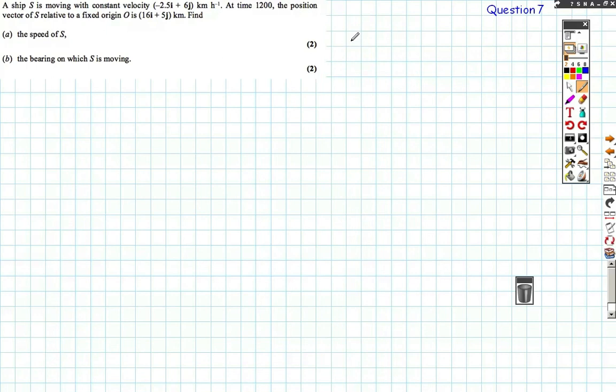So first of all, let's convert these to column vectors. I prefer column vectors. So let's find the velocity of the ship in column form: it's minus 2.5 in the i direction and 6 in the j direction. While we're here, let's find the position vector R of S, and that's (16, 5). We might need that later.